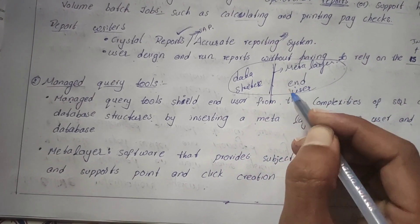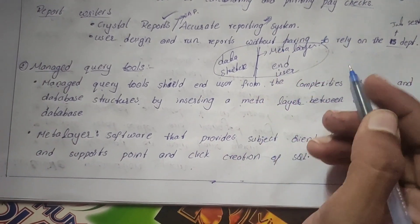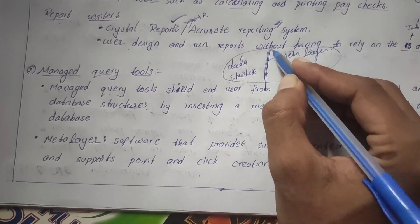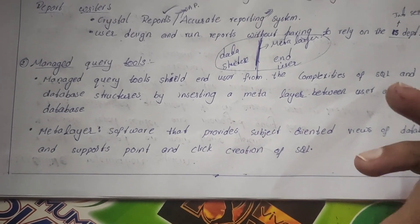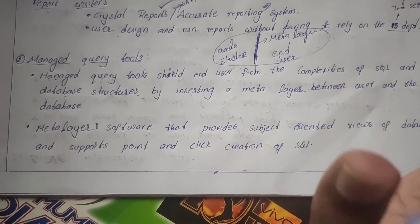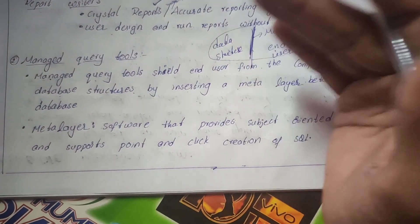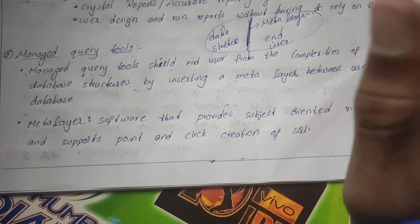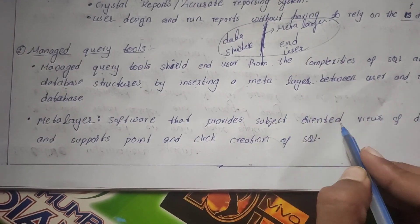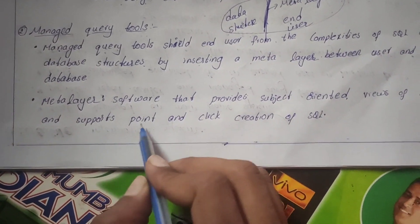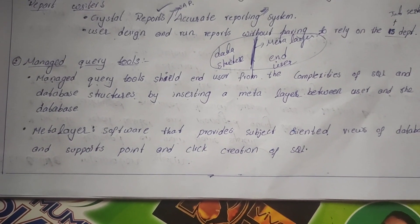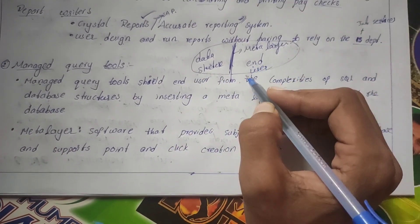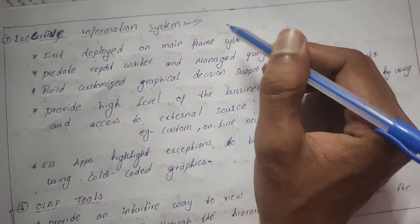The metadata layer is software that provides subject-oriented views of the database — meaning related data of the same type is separated from other data. This layer also supports point-and-click creation of SQL queries.